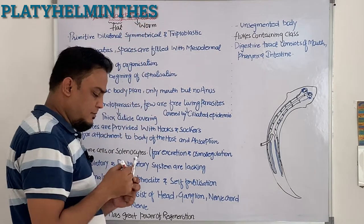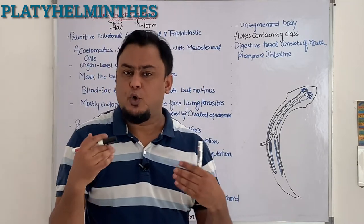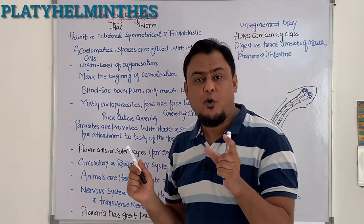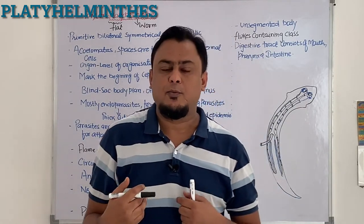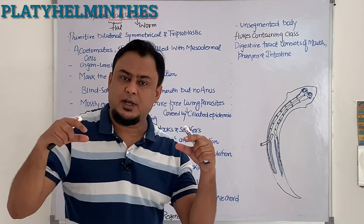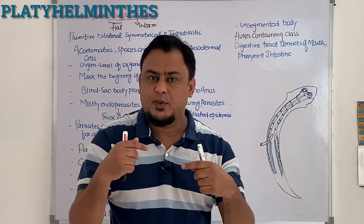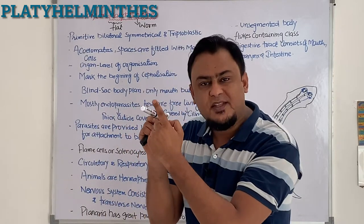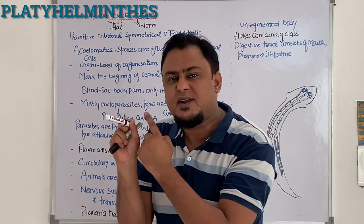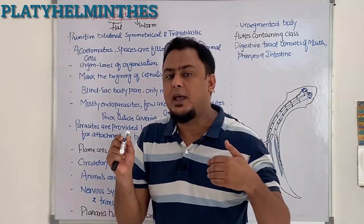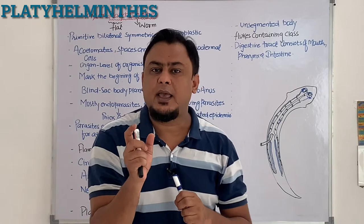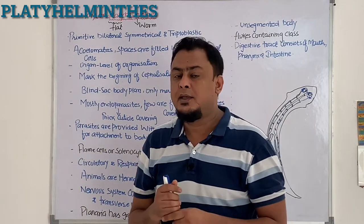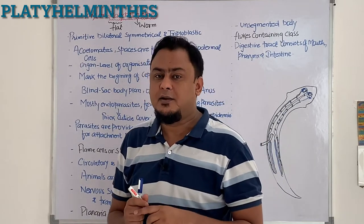Platyhelminthes are totally different from the earthworm. The earthworm is a kind of roundworm — the body is round and segmented. Those ring-like segments are called annuli, and from 'annuli' the term for that phylum is derived. But Platyhelminthes is a totally different phylum.